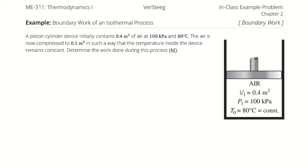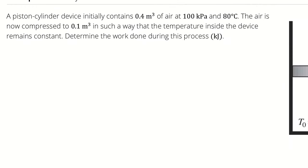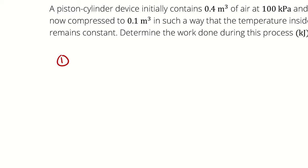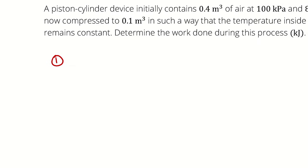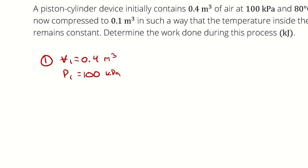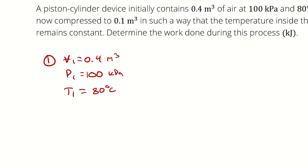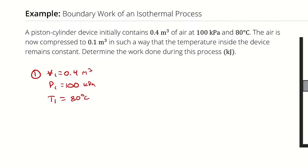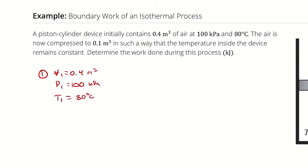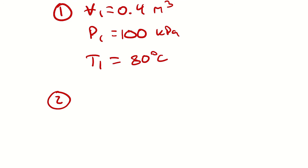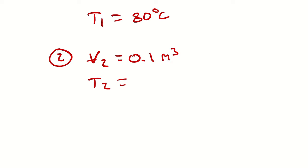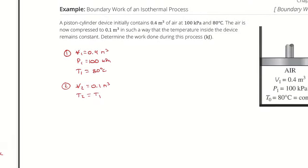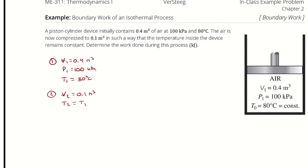I will start to parse out what I know into state point properties. State point 1 has a volume, a temperature, and a pressure. State point 2 has a volume and a temperature. Do you think it's reasonable to assume anything else is constant from state 1 to state 2? You're right — probably reasonable to assume the mass is constant.